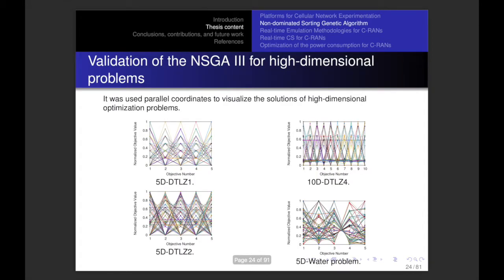How can we visualize solutions for high-dimensional problems using the NSGA-III? The answer is by employing parallel coordinates. We observe four cases: DTLZ1 for five objective functions, DTLZ4 for ten objective functions, DTLZ2 for five objective functions, and the water problem with five objective functions.